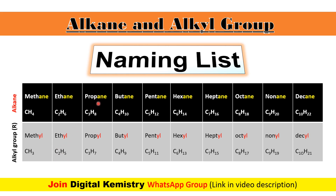Next hai humare paas propane, jise C3H8 se represent kiya jata hai. Yahaan par ek hydrogen ko remove karne par, humare paas alkyl group, yani propyl group ki formation ho rahi hai, jise C3H7 se represent kiya gaya hai.